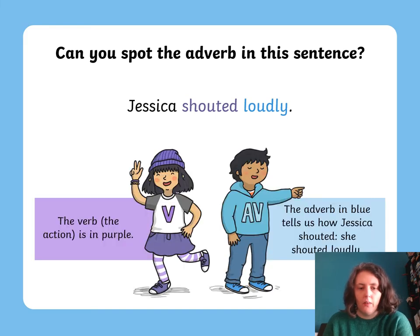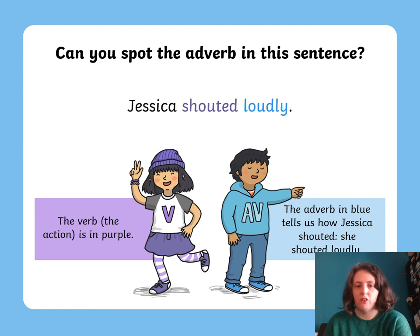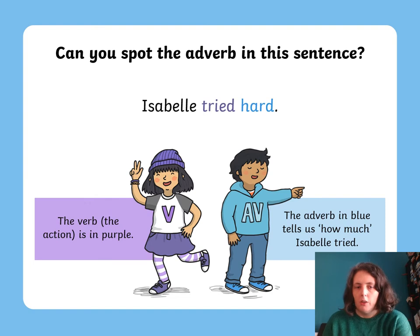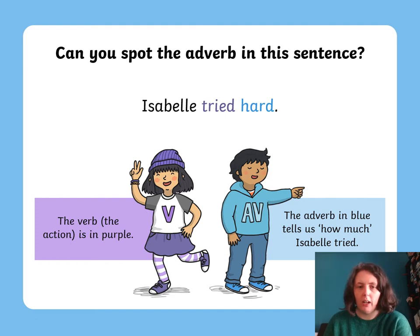So if you look at this sentence — can you spot the adverb? 'Jessica shouted loudly.' The verb is in purple and the adverb is in blue. Jessica shouted, and the adverb is 'loudly' because it tells us how she shouted. Here's another example: 'Isabel tried hard.' The adverb is 'hard' because it tells us how she tried — she tried hard.